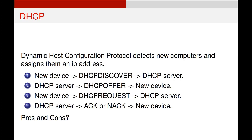That server will come back to the device with an IP address, offering it that address. The device will then request the use of that IP address, and finally the DHCP server will either acknowledge or not acknowledge — ACK or NAK — whether that IP address is appropriate.